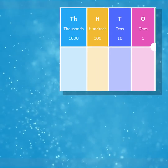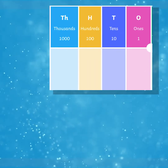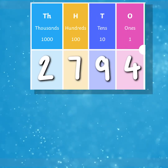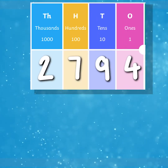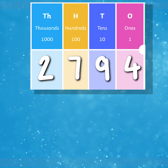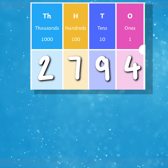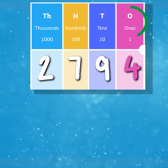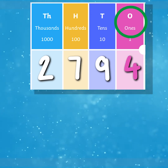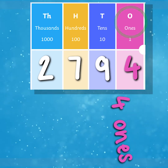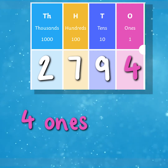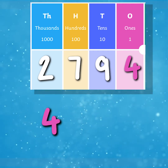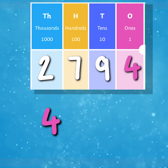Here is the number 2,794 on the place value chart. What's the value of the digit four in our number? Well, we know that the four is in the ones column, so we have four ones. Four lots of one is four, so the value of the four digit is four.